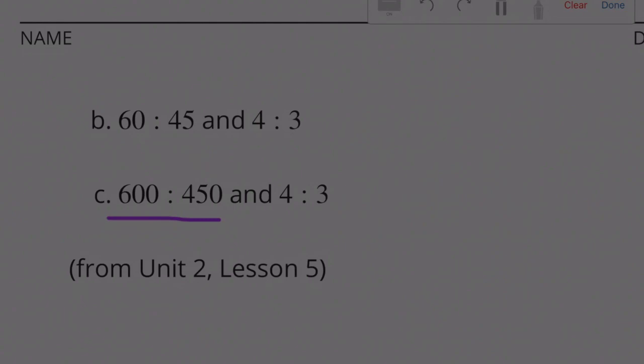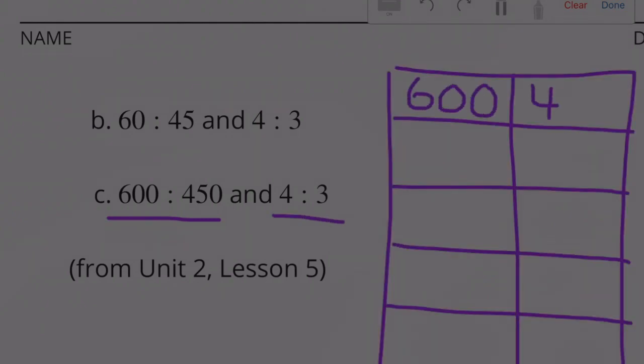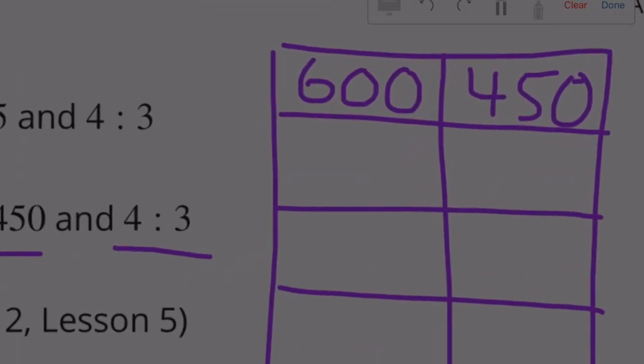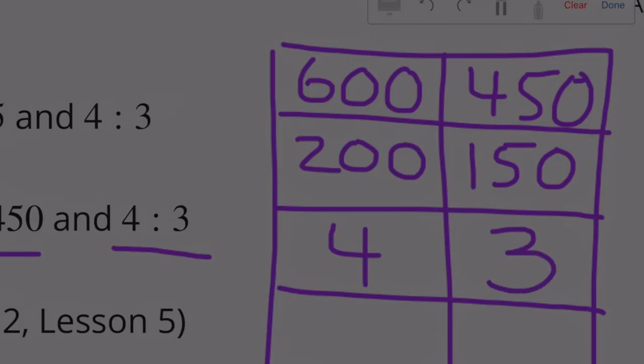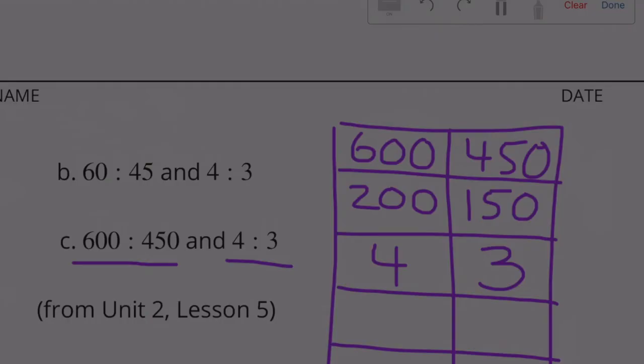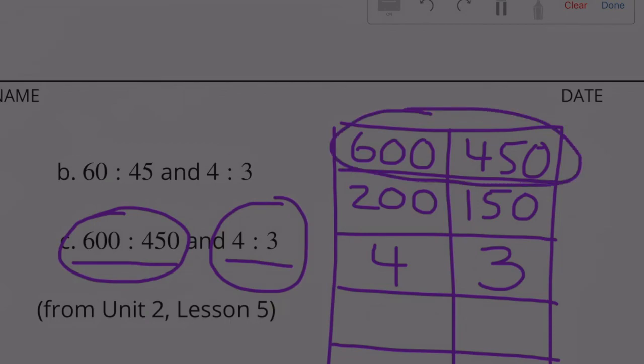C: 600 to 450 and 4 to 3. I know that both these numbers are divisible by 3. 600 divided by 3 is 200. 450 divided by 3 is 150. Both these numbers are divisible by 50. 200 divided by 50 is 4. And 150 divided by 50 is 3. So we've just proved that 600 to 450 is equivalent to 4 to 3. 600 to 450, 200 to 150, 4 to 3, they're all equivalent ratios.